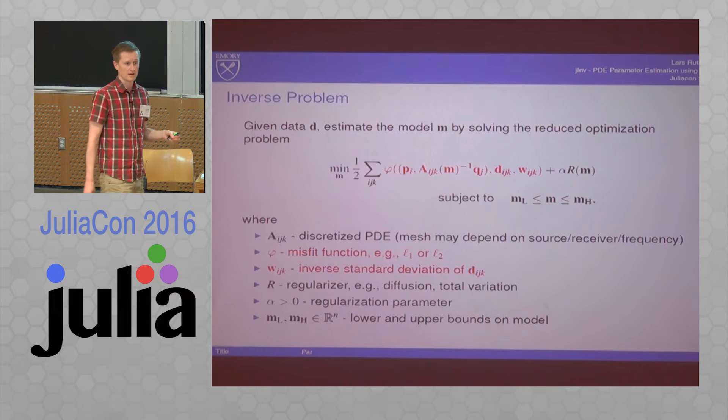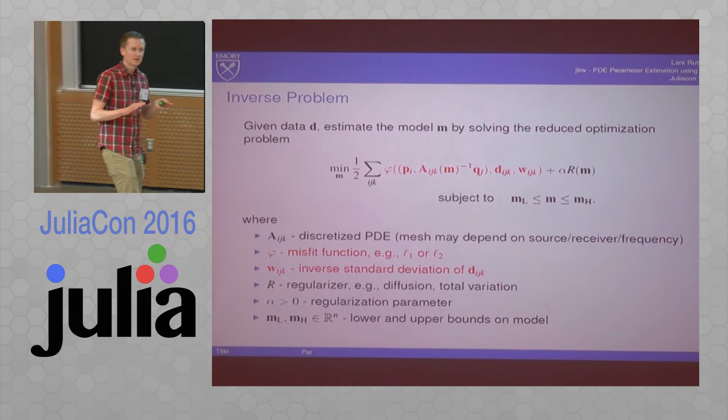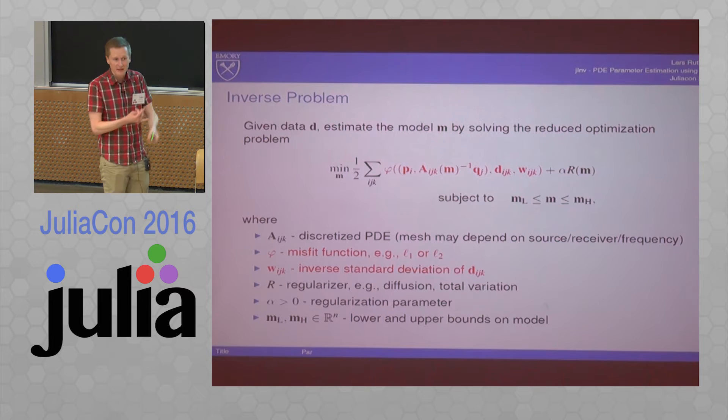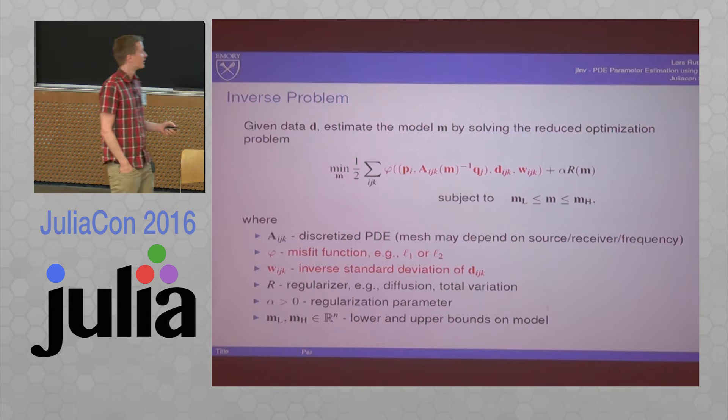So you need to do some bookkeeping, because you cannot arbitrarily send out the PDE to different workers. There's a lot of data that comes with them - meshes, sources, receivers, preconditioners, factorizations. So once that is assigned, you want to keep that fixed. But Julia allows the control to do that.